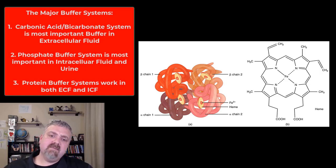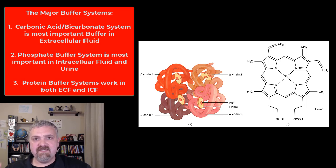The three major buffer systems: you've got the carbonic acid bicarbonate buffer system, most important buffer system in extracellular fluid. Then you have the phosphate buffer system, most important in intracellular fluid and urine. Then you have the protein buffer systems that are very important and work with both extracellular fluid and intracellular fluid.